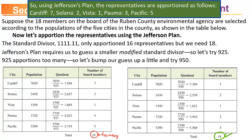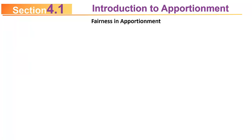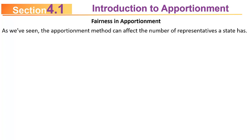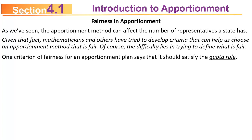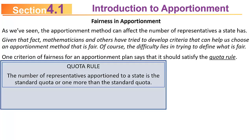None of this is difficult, but you do need to practice. This brings up a topic of fairness. If you're going to decide which plan to use, you have to ask which one is more fair — it affects the number of representatives each state has. One criterion of fairness says an apportionment plan should satisfy the quota rule: the number of representatives apportioned to a state should be the standard quota or one more than the standard quota.